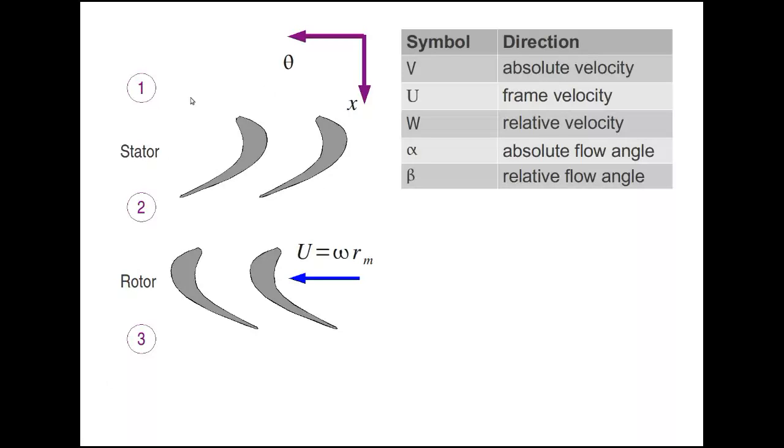Looking at those angles on a cascade diagram, we have a stator and a rotor. Position 1 is at the stator inlet, 2 at the rotor-stator interface, and 3 at the rotor exit. We have theta and X for our coordinate system. If we look at the flow leaving the stator, sketched roughly aligned with the stator blades, what we have is the absolute flow. That's V2, making an angle alpha2 with the axial direction. Since alpha2 is in the positive direction of rotation, alpha2 is positive.